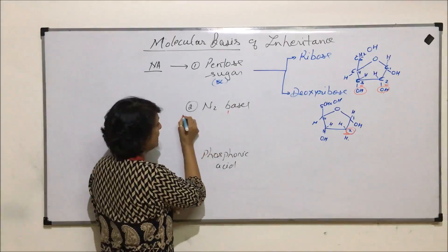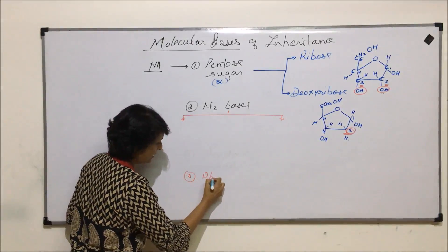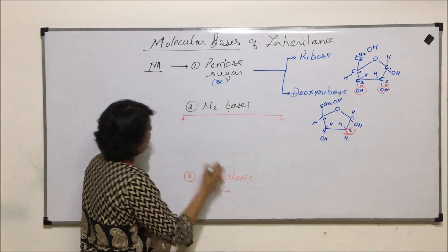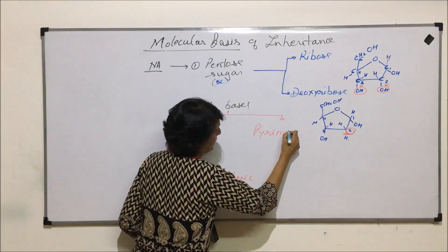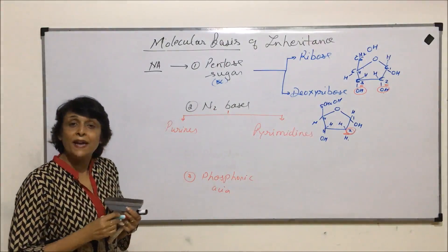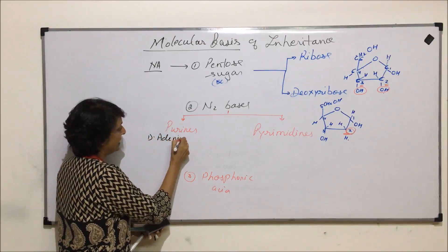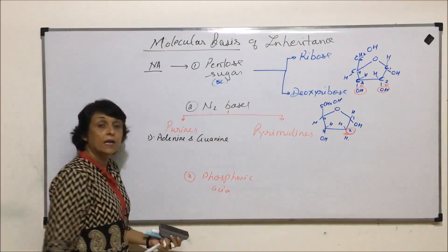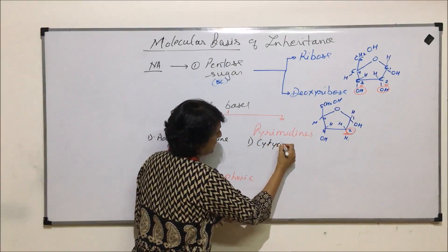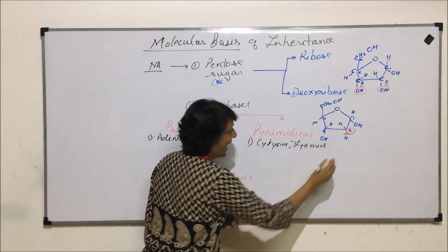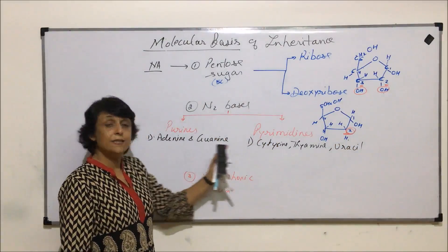Nitrogen bases. The nitrogen bases are divided into two categories: purines and pyrimidines. Purines have two examples: adenine and guanine. There are three pyrimidines: cytosine, thymine, and uracil. So there are two purines and three pyrimidines.